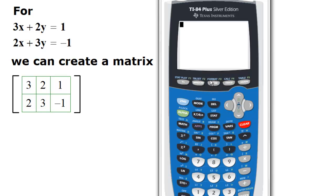Now we are going to see how to use a TI-84 Plus calculator to find the row reduced echelon form of the matrix that's given.